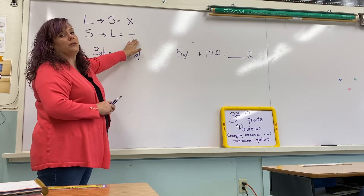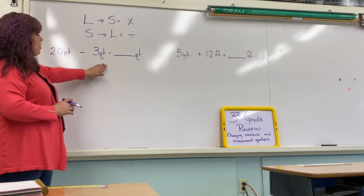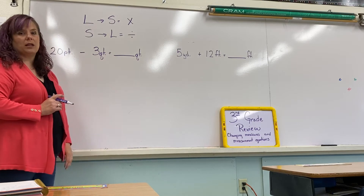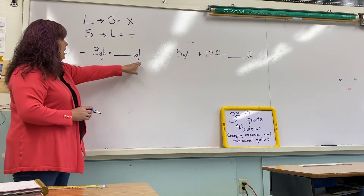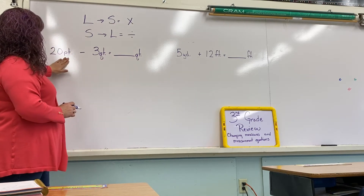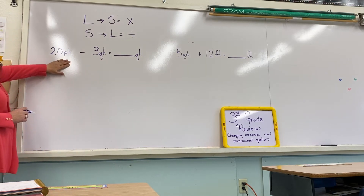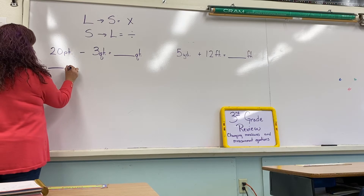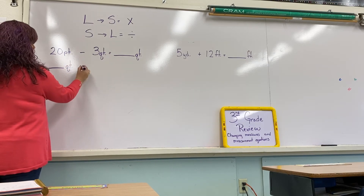So let's take our problem: 20 pints take away three quarts equals how many quarts. First we need to identify what needs to change. If our answer needs to be in quarts, which one of these is not in quarts that we need to change? Yes, very good — the first one. So we're going to write 'blank quarts' because we're changing it to quarts, and this stays the same: take away three quarts equals how many quarts.